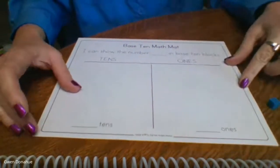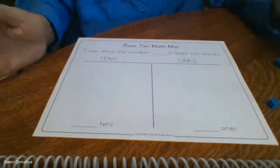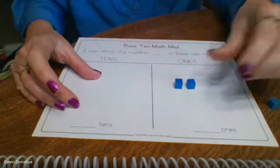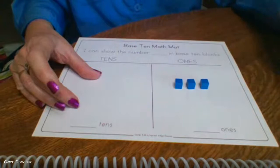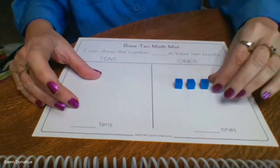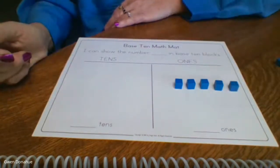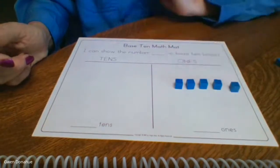So if I wanted to show you the number 5, I would have to put five ones on there because 5 is just 5 cubes all by themselves.